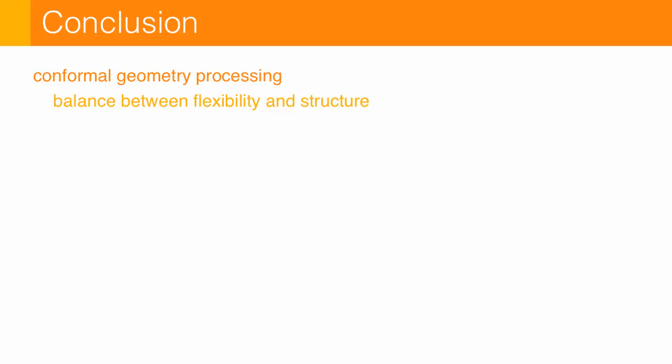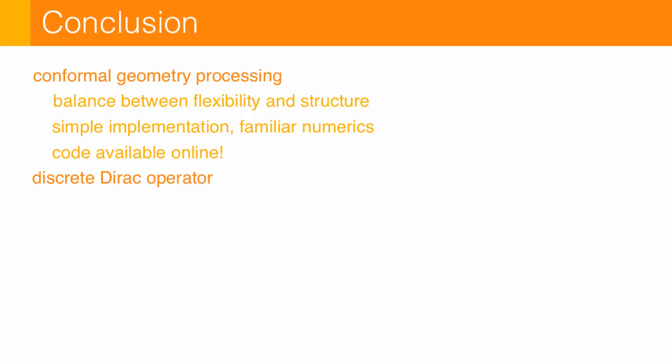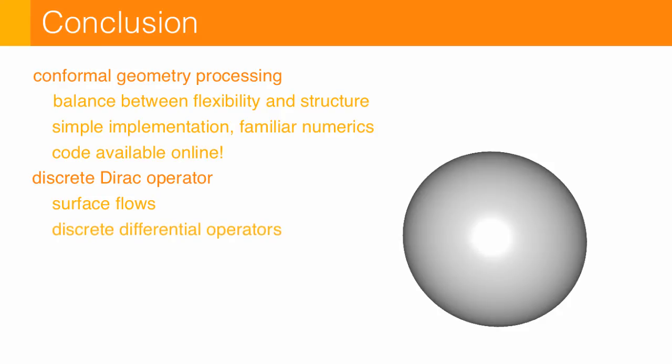But if you go back to this diagram we had about all the different types of transformations we can apply to a surface, you realize that conformal is one of only really a couple ways we can even hope to process geometry while still preserving some amount of structure. And so I think it's really important to understand what all the possibilities are here, especially since computationally this is not a big deal.